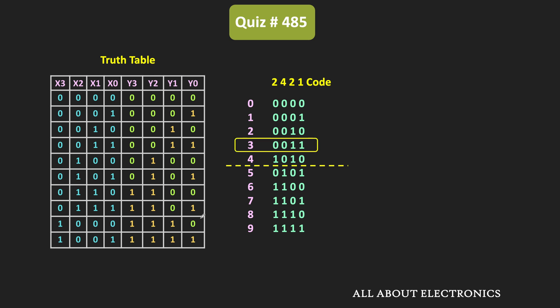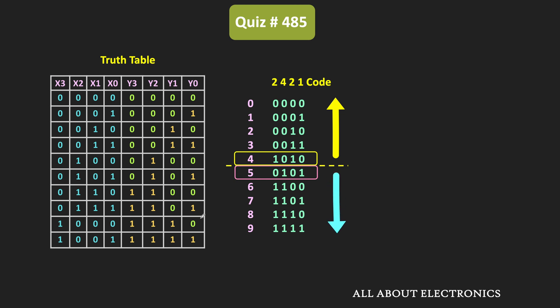For example, the 9's complement of digit 3 is 6. Just by changing 0s to 1s, we get the complement of 3. Likewise, the 9's complement of 4 is 5. Just by changing 1s to 0s and 0s to 1s, we get the complement. The digits from 0 to 4 are mirror images of the digits 5 to 9. So 2421 is a self-complementing code, and here are the corresponding 2421 BCD codes.